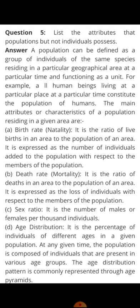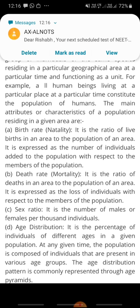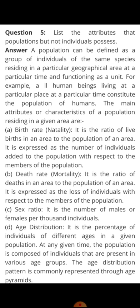Age distribution: we studied different types of graphs and pyramids, which show whether the population is stable, declining, or growing. Age distribution tells us whether a population will flourish, remain stable, or decline. If pre-reproductive organisms are more, the population will grow; if fewer, it will decline; if equal to reproductive, it will remain stable.